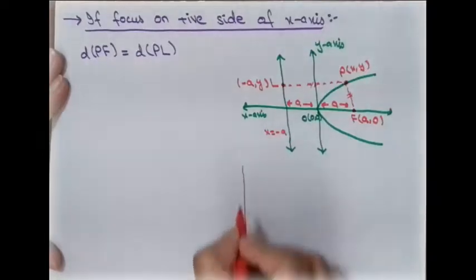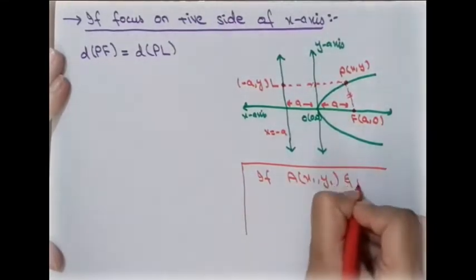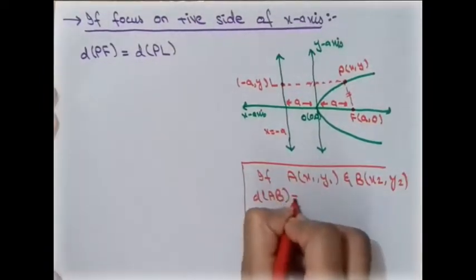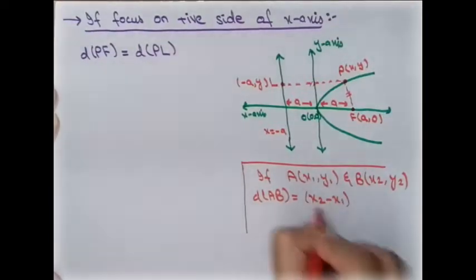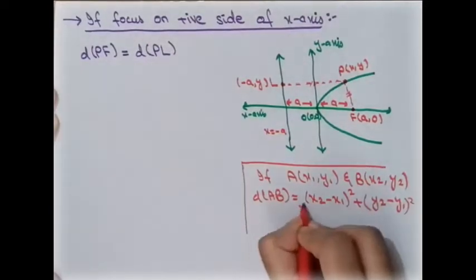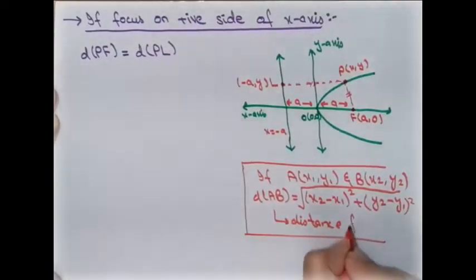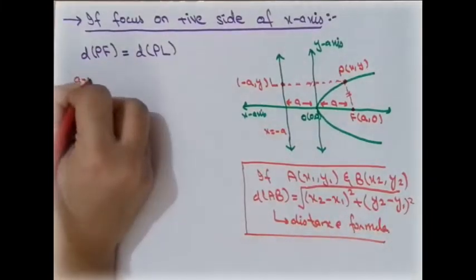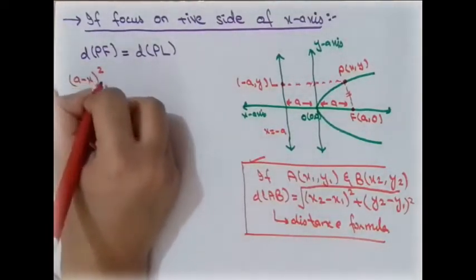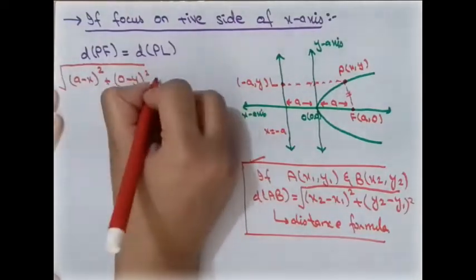Using the distance formula: for two points (x₁, y₁) and (x₂, y₂), the distance is √((x₂−x₁)² + (y₂−y₁)²). Applying this, the distance PF equals √((A−x)² + (0−y)²), and the distance PL equals √((−A−x)² + (y−y)²).